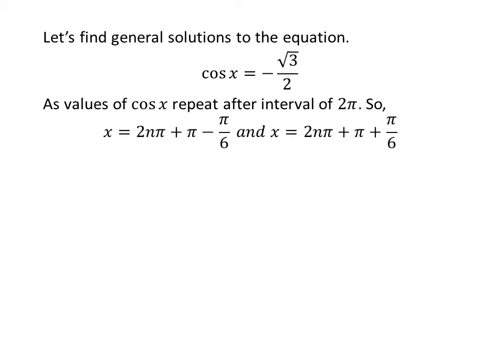Let us find the general solutions. As we know, the values of cosine of x repeat after an interval of 2 times pi. So the general solutions are 2 times n times pi plus pi minus pi upon 6, and 2 times n times pi plus pi plus pi upon 6, where n is an integer.